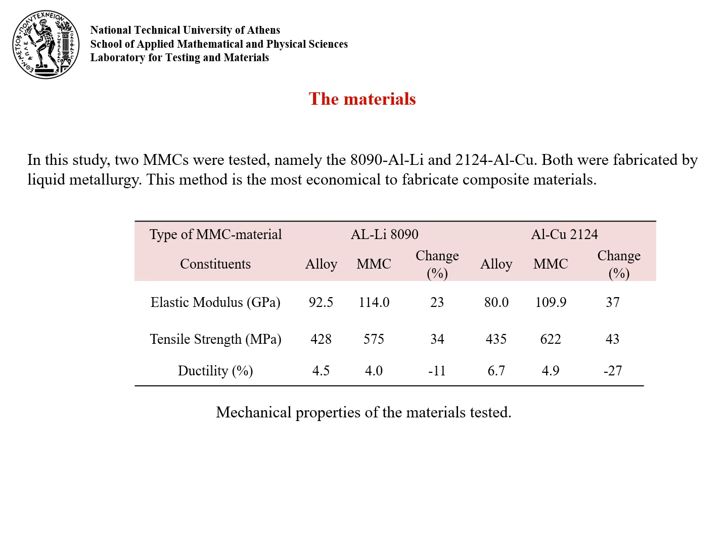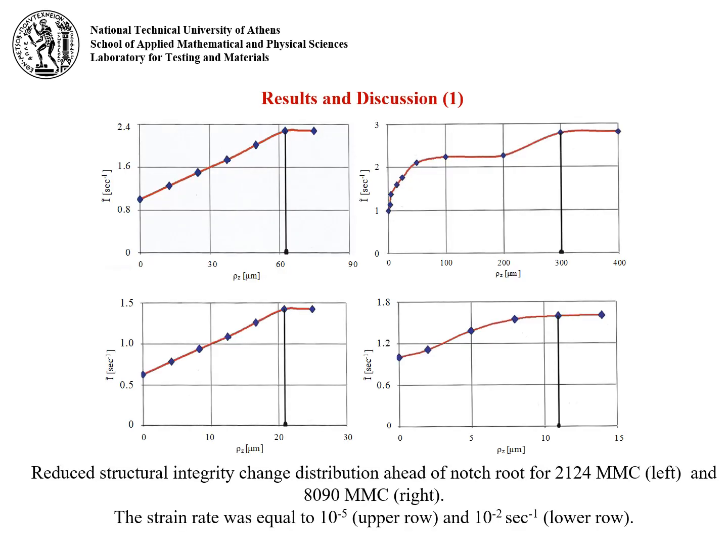Two MMCs were tested here. Typical plots for the variation of the reduced structural integrity distribution ahead of the notch root for both materials are shown in this slide for two different strain rates.